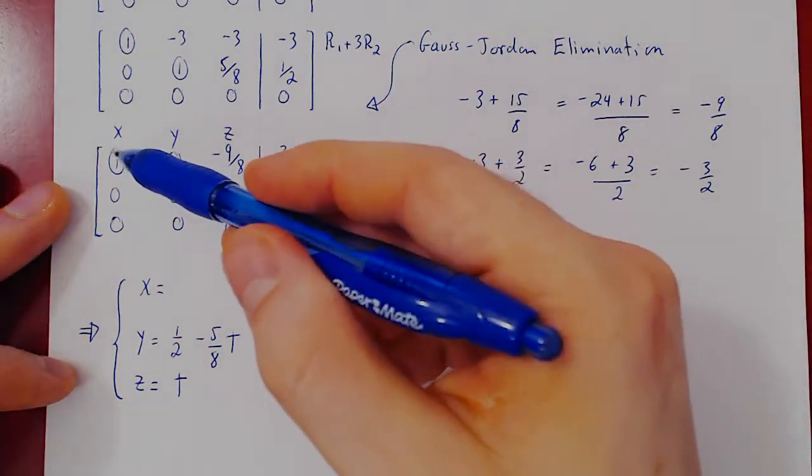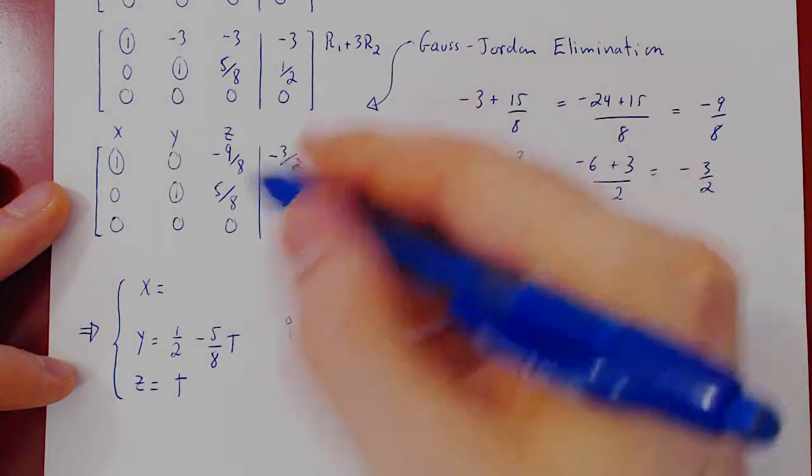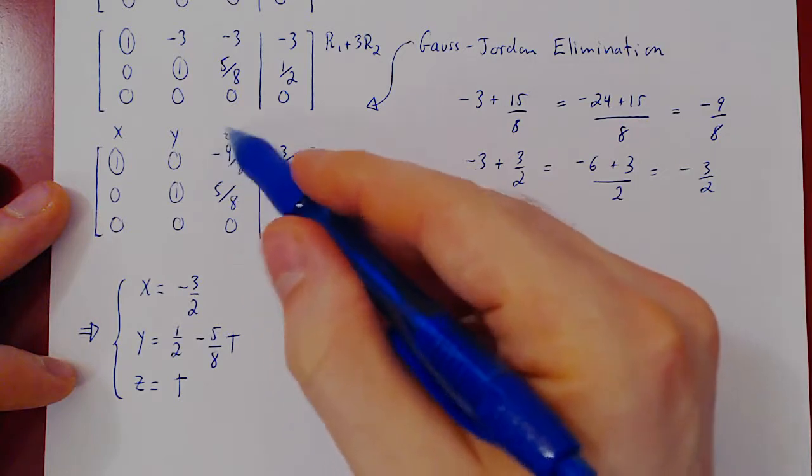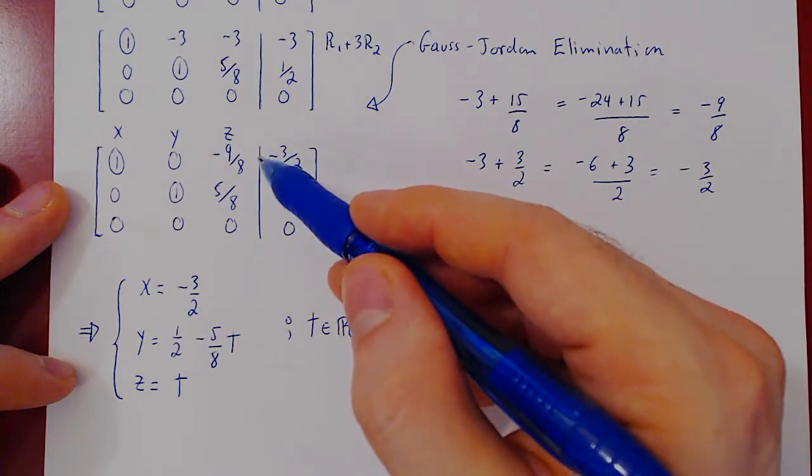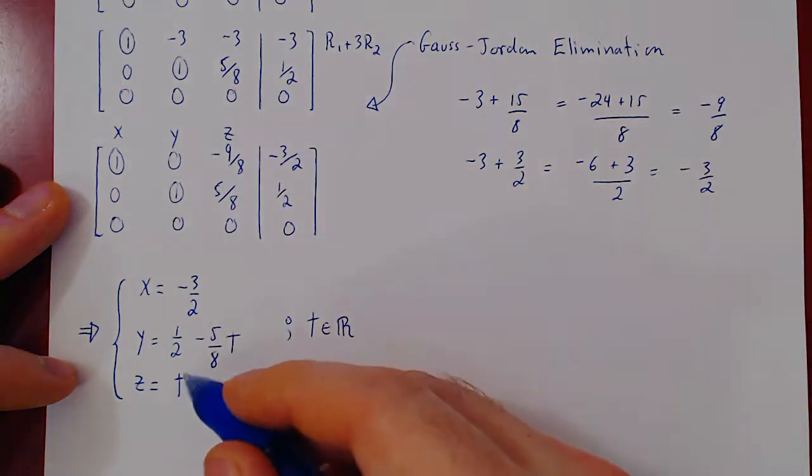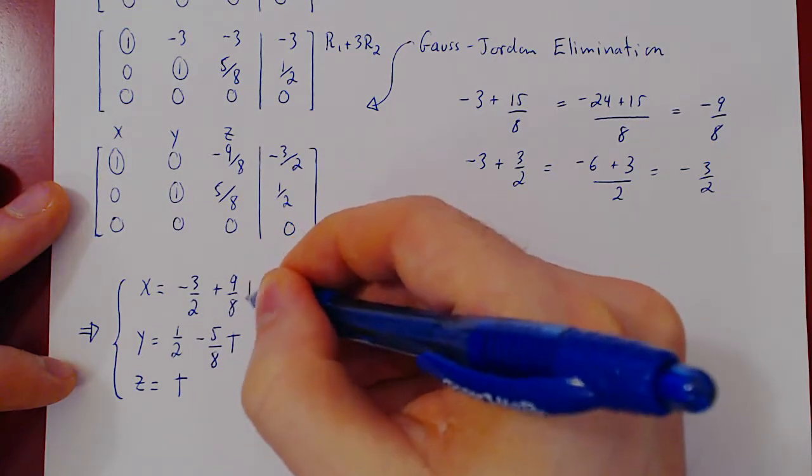We can solve for x using its leading one. So x equals negative 3 over 2. There's a negative 9 over 8 z on the left. On the right of the equal sign, it will become a positive 9 over 8 z, but again, z equals t, so positive 9 over 8 t.